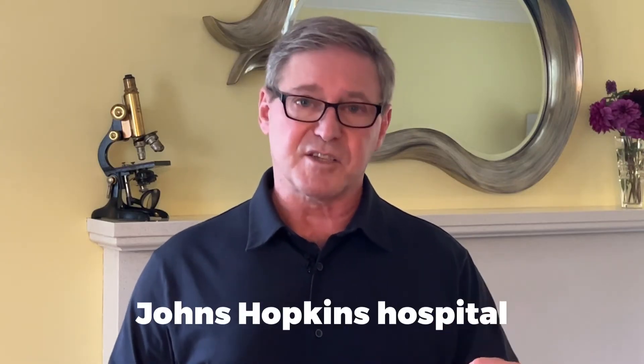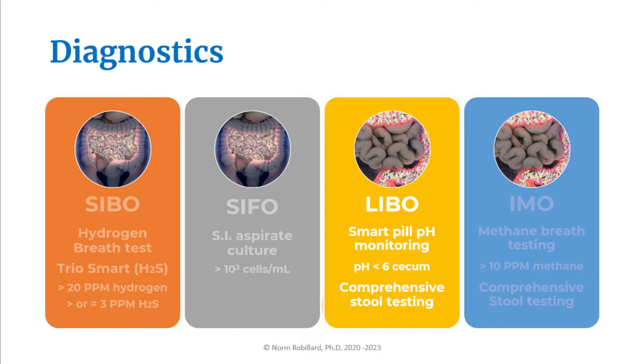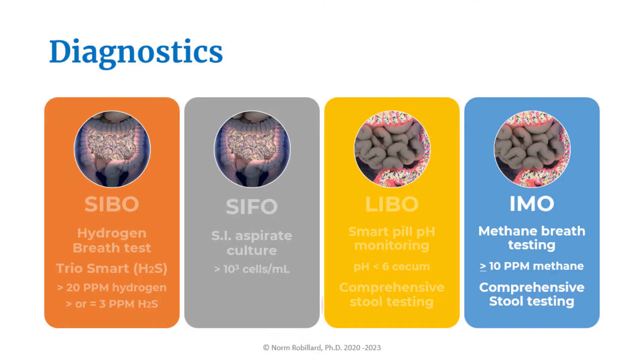For LIBO, like SIFO, there's no standard test. But it may be possible to get tested in a teaching hospital such as Johns Hopkins because they have access to smart pill technology that can measure changes in intestinal pH, and that's how the LIBO connection was initially made. Another possible alternative is a comprehensive stool test. Also, a negative lactulose breath test combined with the presence of symptoms and excess gas may be indicative of LIBO. For IMO, it's also diagnosed using a lactulose breath test, but in this case they're looking for methane gas levels greater than 10 parts per million at any point in the test, indicating an overgrowth of methanogens.